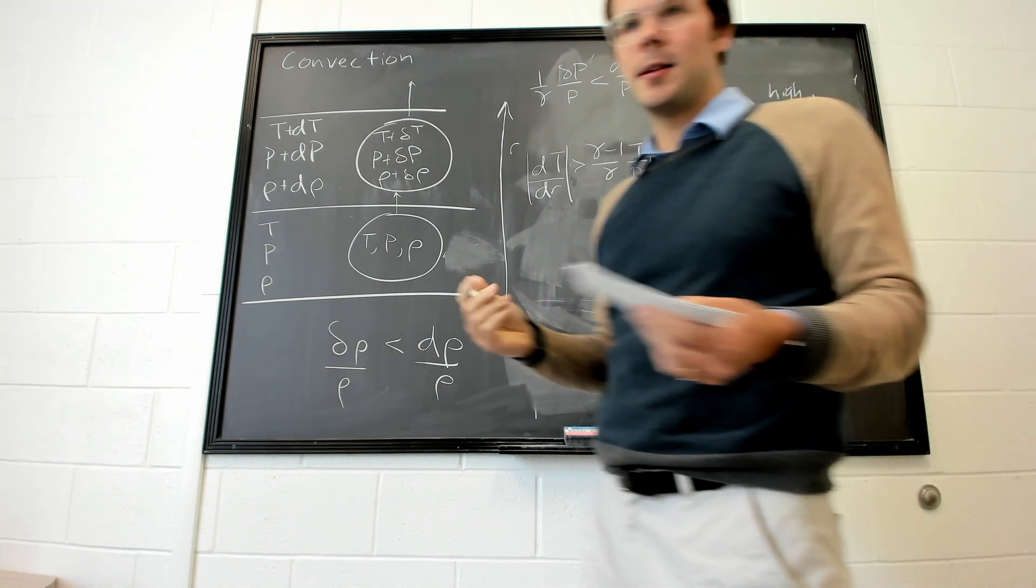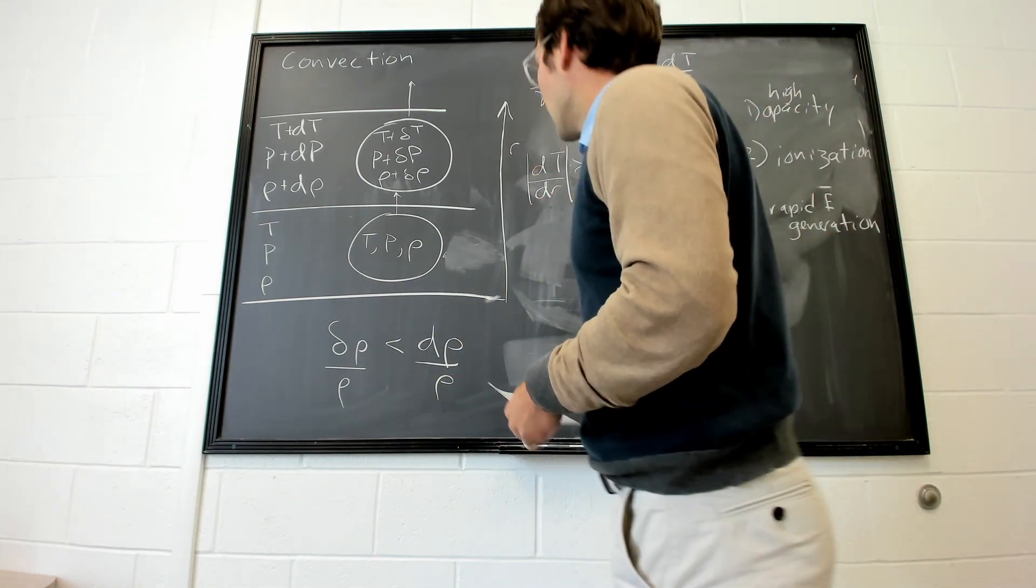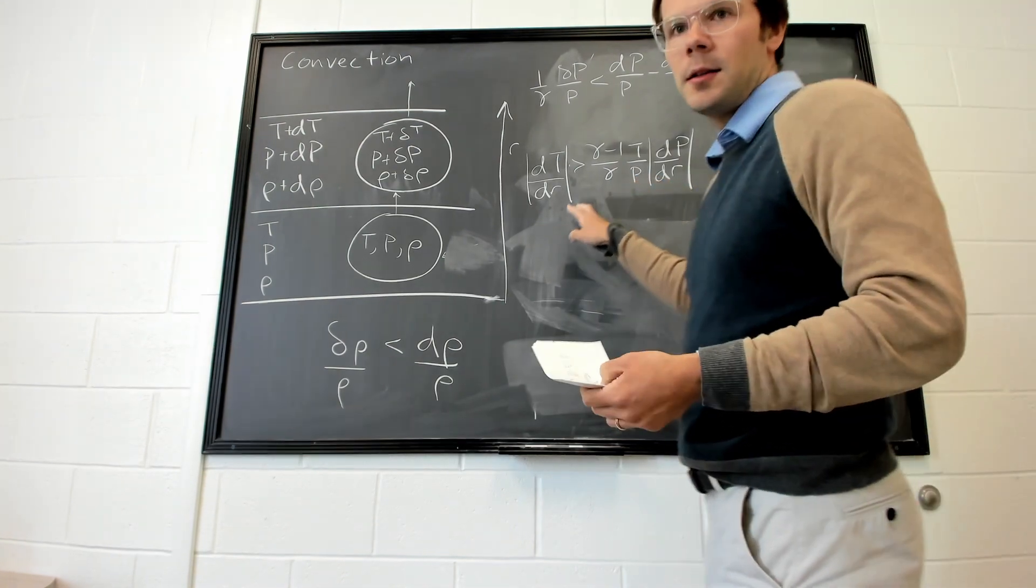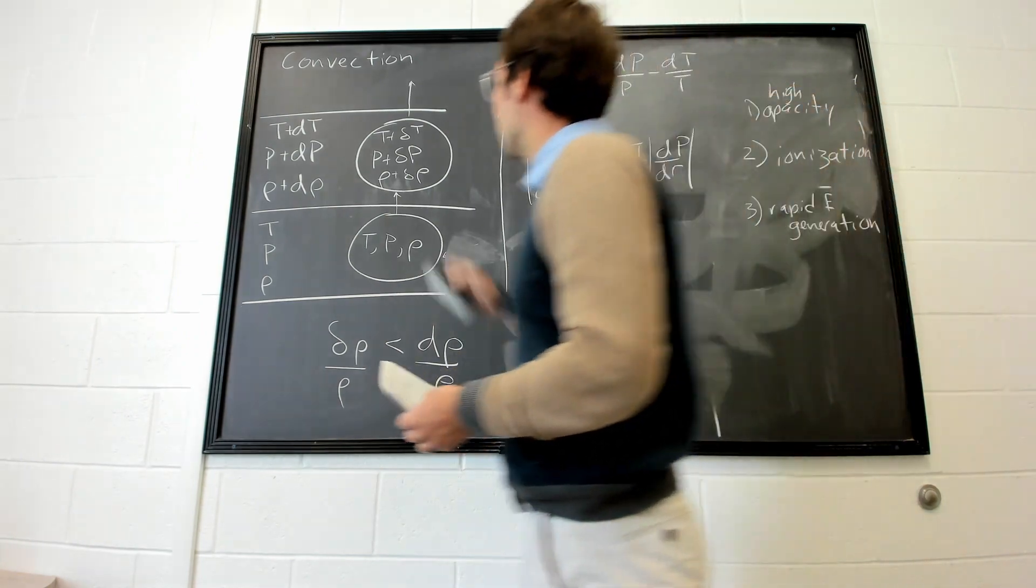And the final one is rapid energy generation, usually inside the interiors of massive stars. So just to wrap up, I'd like to plot these quantities for the sun.